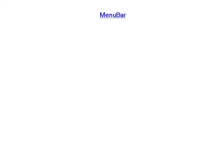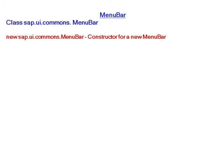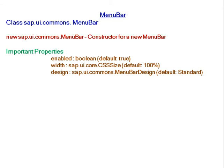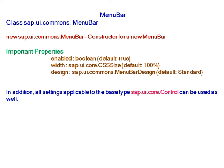SAPUI5 MenuBar belongs to class sap.ui.commons.menubar. For creating a new menu bar, the constructor is new sap.ui.commons.menubar. Important properties are enabled, width, and design. In addition, all settings applicable to the base type sap.ui.core.control can be used as well.